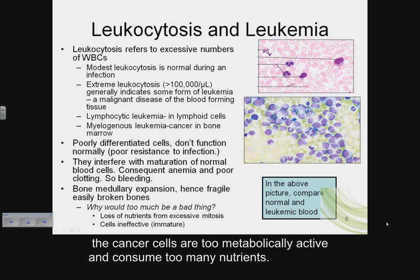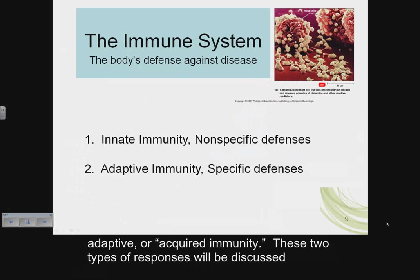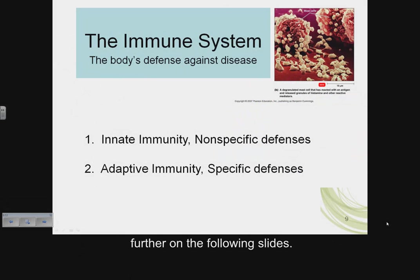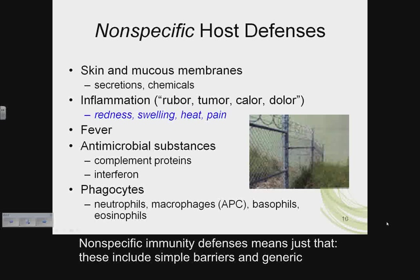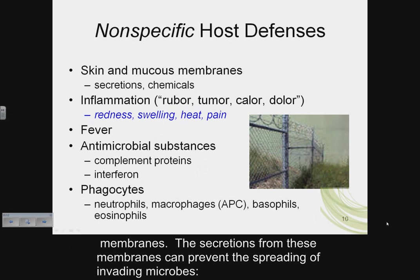The immune response is divided into two functional categories: innate or nonspecific, and adaptive or acquired immunity. Nonspecific immunity defenses include simple barriers and generic reactions to antigens and foreign microbes. The barriers include cutaneous and mucous membranes, whose secretions can prevent the spreading of invading microbes.